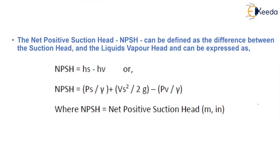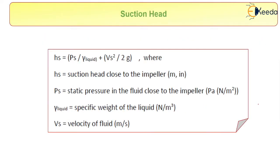So what is suction head? Suction head is given by this formula: hs equals ps over ρg plus vs squared over 2g. Where hs stands for suction head in meters and ps stands for static pressure.